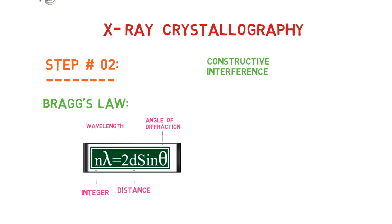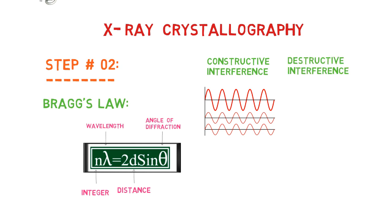Constructive interference indicates that the diffracted X-rays are in phase or lined up with each other, while destructive interference indicates that the X-rays are not exactly in phase with each other. The result is that the measured intensity of the X-rays increases and decreases as a function of the angle and distance between the detector and the crystal.